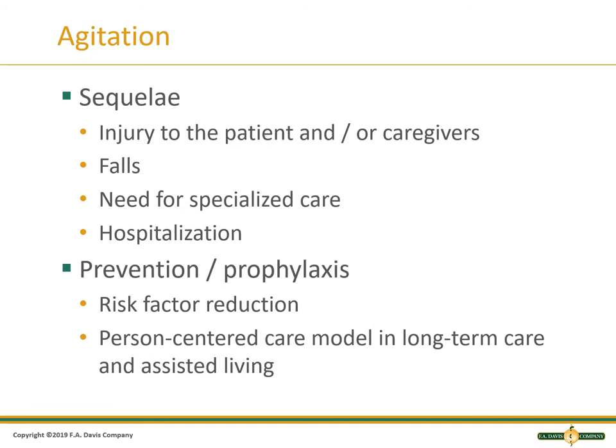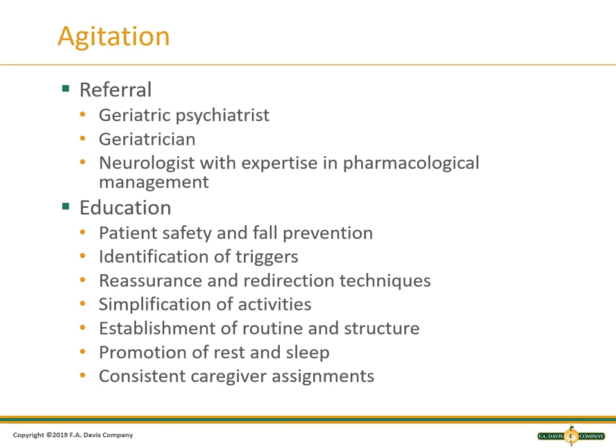Looking at a person-centered care model in long-term care and assisted living — if there's somebody a patient doesn't like, why make them their caregiver? If they respond differently to somebody else and have more of a relationship with them, why not utilize that? Look at each individual separately rather than treating care as a task that just has to be done. Referrals to geriatric psychiatrists are important because they understand cognitive function and impairment as well as the psychosocial. Neurological specialists can help with pharmacological management. We educate those at home as well as facility staff about safety, fall prevention, triggers, how to redirect, and how to decrease stimuli.